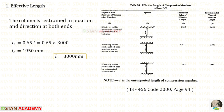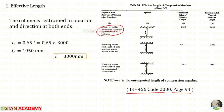Now let us find the effective length. In the question it is given that the column is restrained in position and direction at both ends. Let us refer to the code book page number 94. We have to select the first condition: effectively held in position and restrained against rotation at both ends. The formula to find the effective length is 0.65L, so 0.65 into 3000 gives us 1950 millimeter.